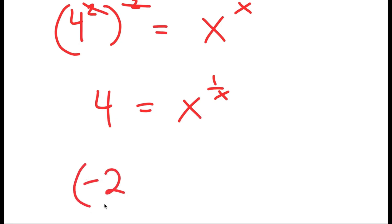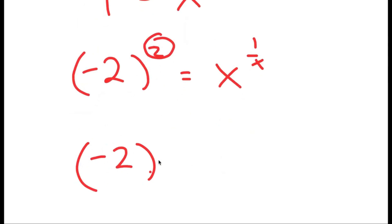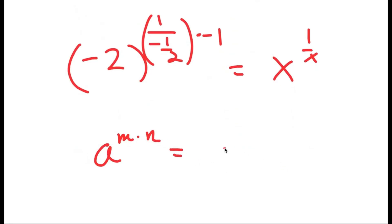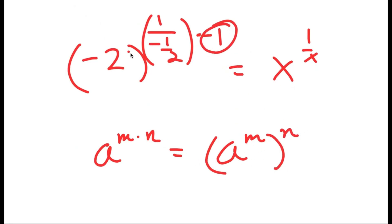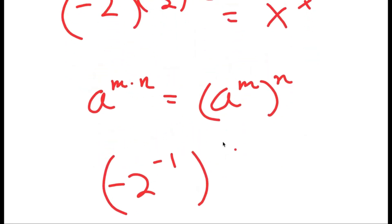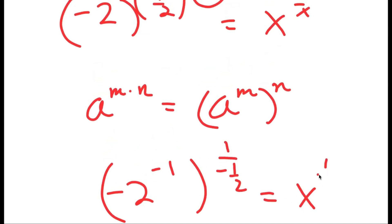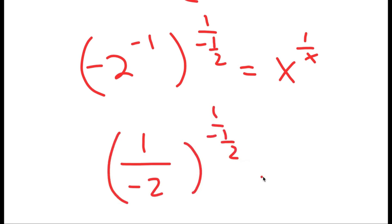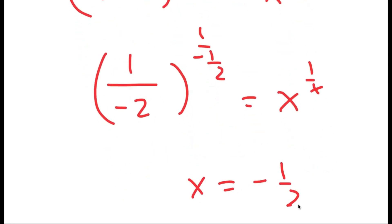But 4 is also the same as negative 2 squared. The exponent 2 can be rewritten as 1 over negative 1 half times negative 1. Using the property a to the power of m times n equals a to the power of m to the power of n, I move the negative 1 to be an exponent of negative 2. So I get negative 2 to the power of negative 1 to the power of 1 over negative 1 half, equals x to the power of 1 over x. Since negative 2 to the power of negative 1 is negative 1 half, my second solution is x equals negative 1 half.